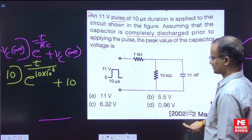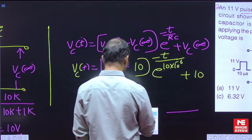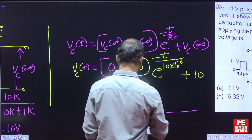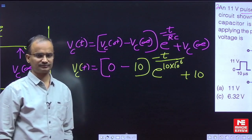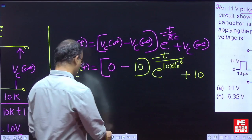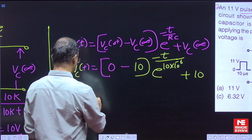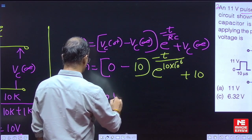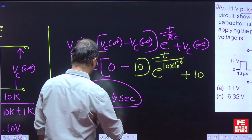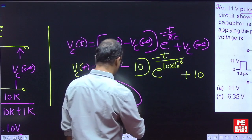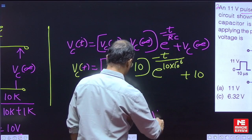In this example, for the given pulse input, the capacitor voltage will be maximum at T equal to 10 microseconds. Substituting T equal to 10 microseconds and simplifying, V_C equals 6.32 volts.